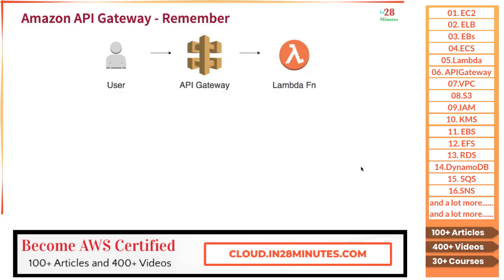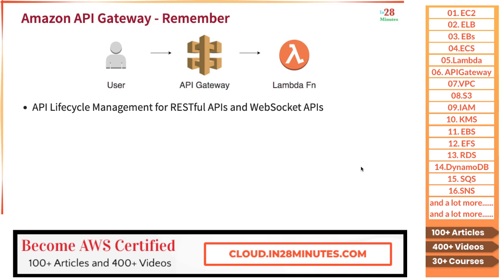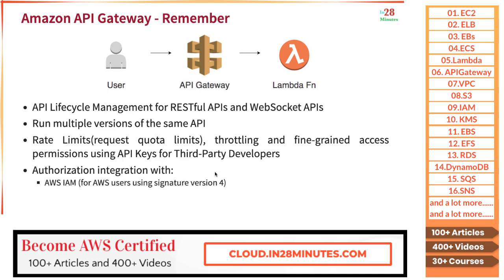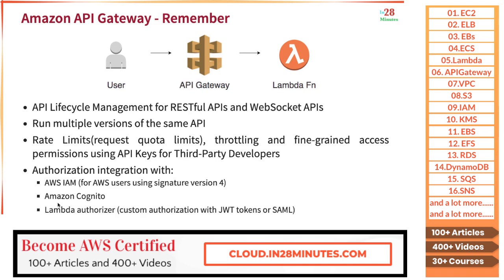Welcome back. Let's review what we've learned about API Gateway. API Gateway provides API lifecycle management for RESTful APIs and WebSocket APIs. You can run multiple versions of the same API. Important features include rate limiting, throttling, and fine-grained access permissions using API keys for third-party developers. For authorization, you can integrate with IAM for internal AWS users, with Amazon Cognito, or write a custom Lambda function — also called a Lambda Authorizer — to authorize your API requests.